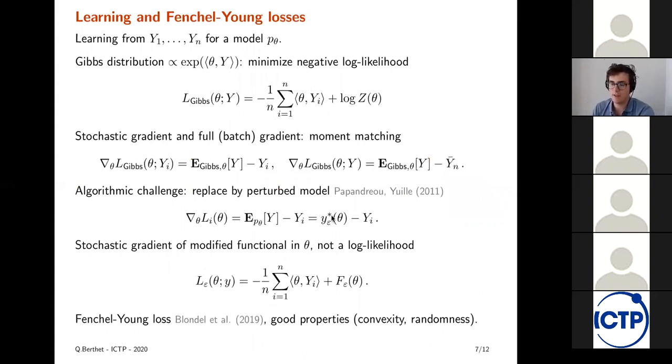So how can we use this to learn? Well, the idea is to say, we might be in a situation where we observe some data Y1, Yn that comes from a model P theta. We observe the path that people have taken from point A to point B. These paths are different and we want to infer the true costs, the true expected costs, based on the idea that people have minimized their costs with perturbation. So if you do this under the Gibbs, you minimize a negative log likelihood. So this is the typical Gibbs inference problem. You have a linear term and a log sum exp, log partition function term. And the stochastic gradient or full batch gradient are doing a sort of moment matching.